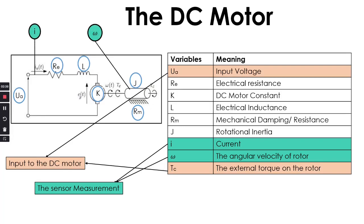And this is how the sensors are attached: there is a current sensor or ammeter and an angular velocity sensor or tachometer.